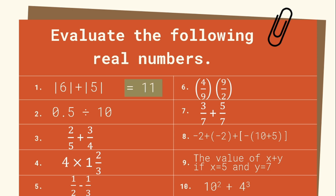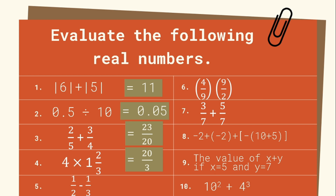Number 2: 0.5 divided by 10 is 0.05. Number 3: 2 over 5 plus 3 over 4 is equal to 23 over 20. Number 4: 4 times 1 and 2 thirds is equal to 20 over 3. Number 5: 1 half minus 1 third is equal to 1 over 6. Number 6: 4 over 9 times 9 over 2 is equal to 2. Number 7: 3 over 7 plus 5 over 7 is equal to 8 over 7.